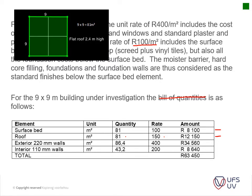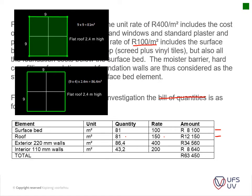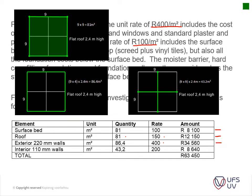The exterior walls are calculated by taking the perimeter of the 9x9 building and multiplying by the height of 2.4 meters to get the square meter area, priced at 400 rand per square meter. The interior walls are calculated at 43.2 square meters at a rate of 200 rand per square meter. Adding all elements together gives a total construction cost of R63,450.